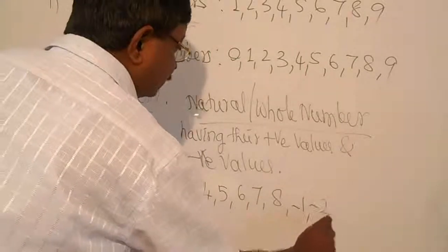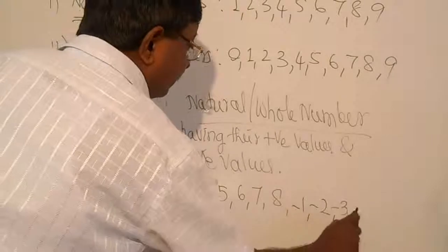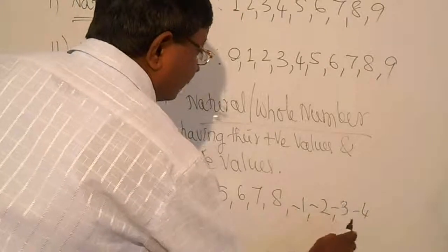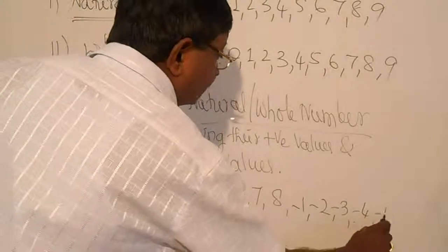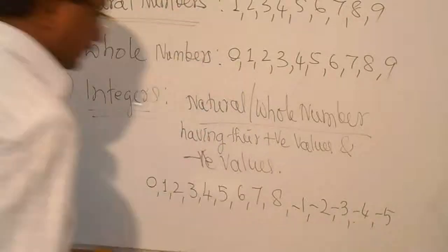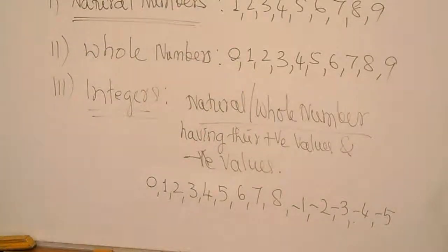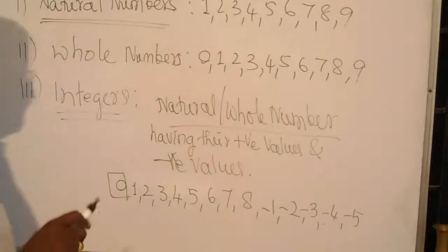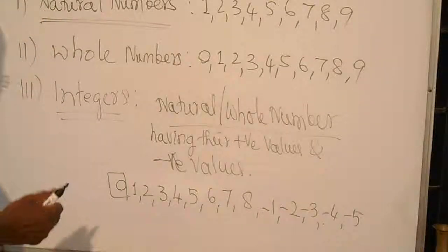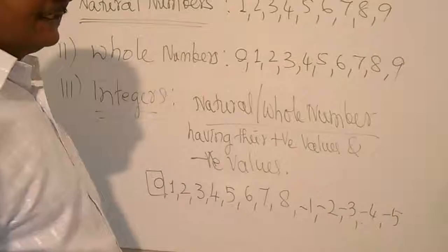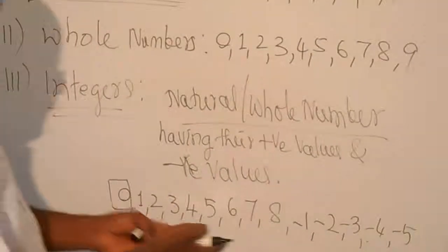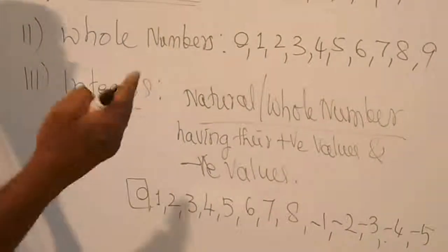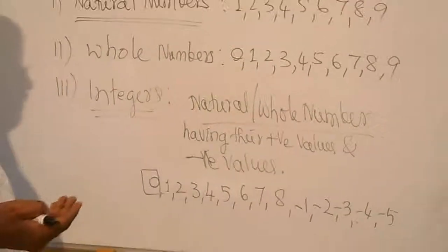So integers include: zero, one, two, three, four, five, six, seven, eight, and also minus one, minus two, minus three, minus four, minus five, et cetera. Zero is neither positive nor negative, but one, two, three, four, five, six, seven are positive values, and minus one, minus two, minus three, minus four, minus five, minus six, seven, eight are the negative values.